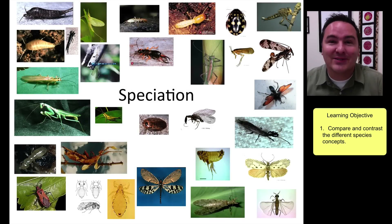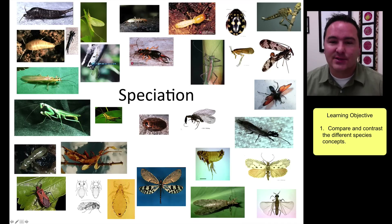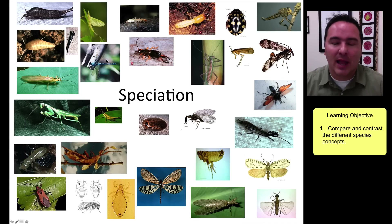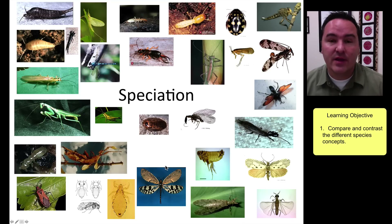In this lecture we're going to be learning about speciation. On this slide I've got all of the orders of insects, and it's really amazing the diversification that has happened in insects since their common ancestor. We have that similar body plan of three body parts, six legs, one pair of antennae, most of them have wings, but there's such a huge diversification that happened via the process of speciation.